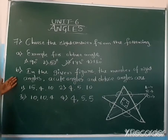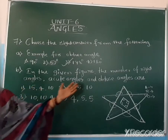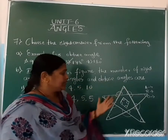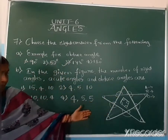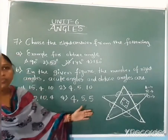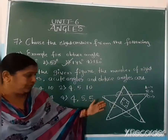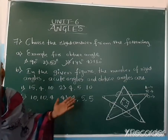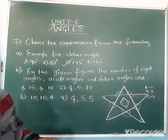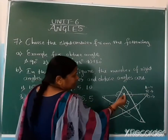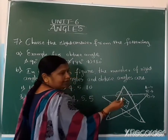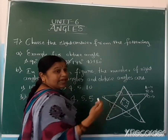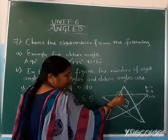Now see part B. In the given figure, find the number of right angles, acute angles, and obtuse angles. This is the given figure — it is a triangle, and triangles compulsorily have acute angles.